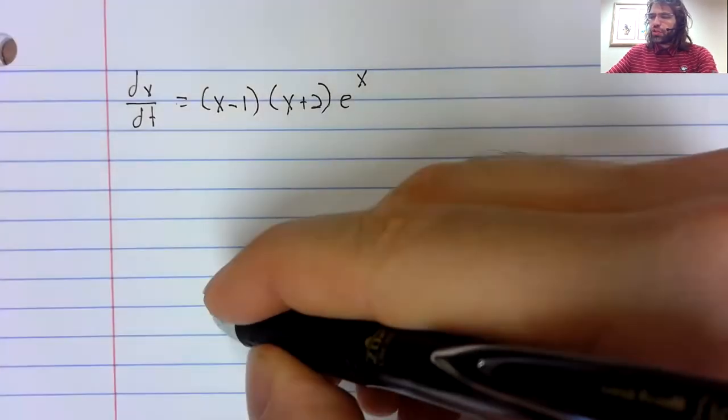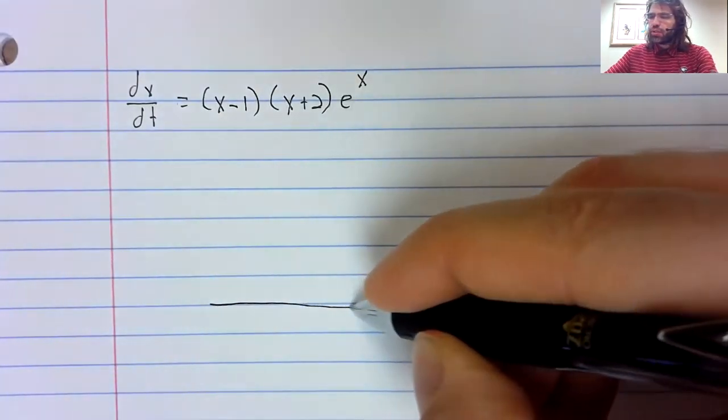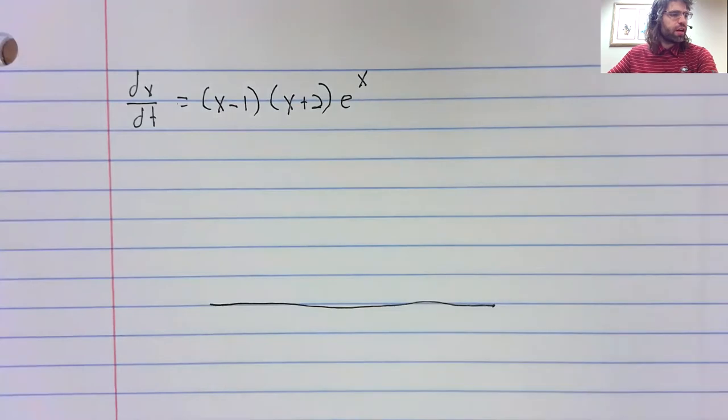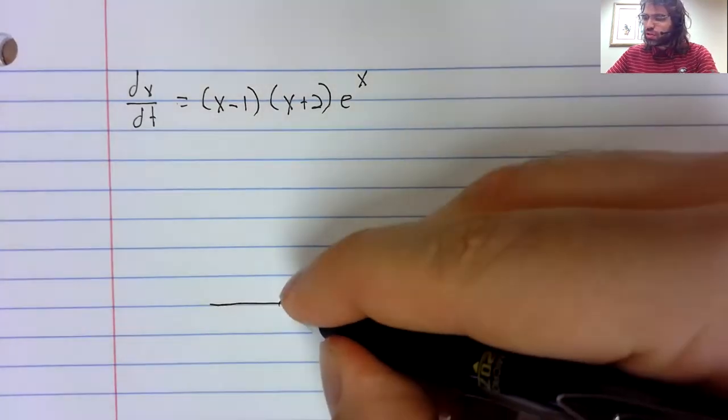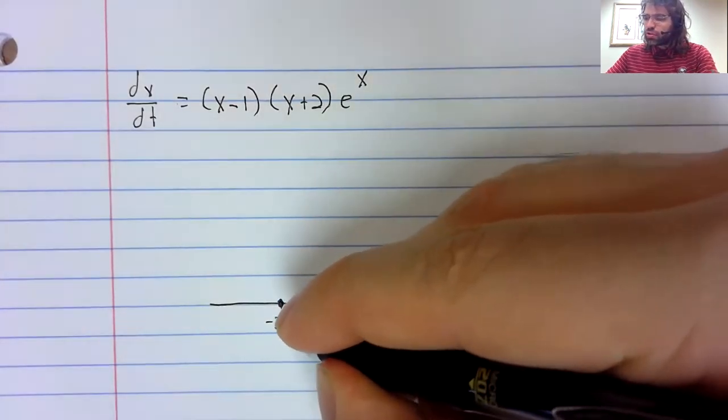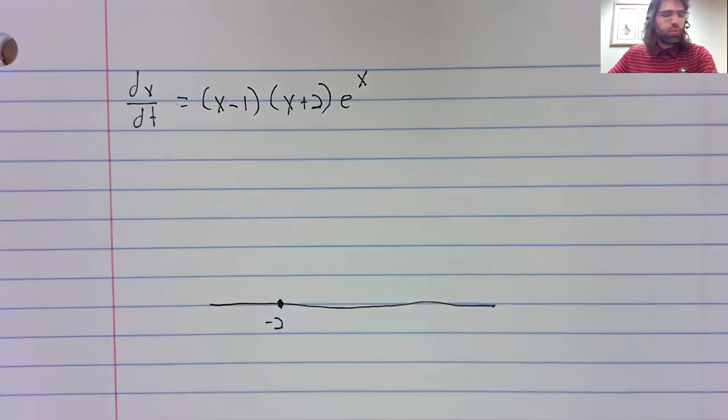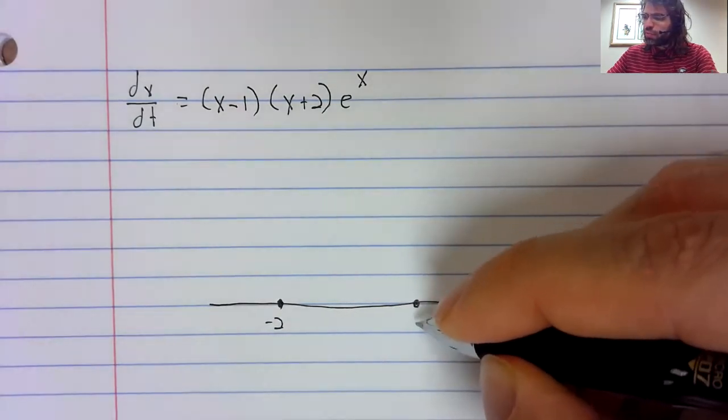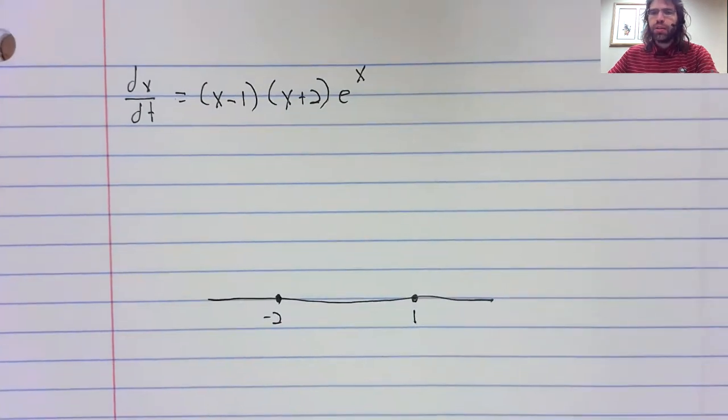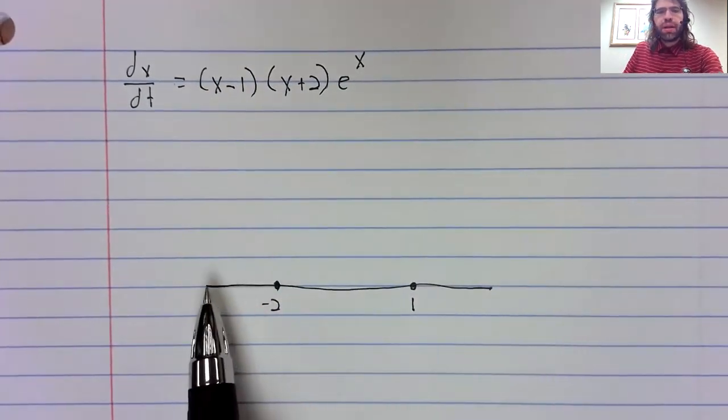Here's the differential equation and I'm going to find the fixed points. Just as before, they were negative two and one.